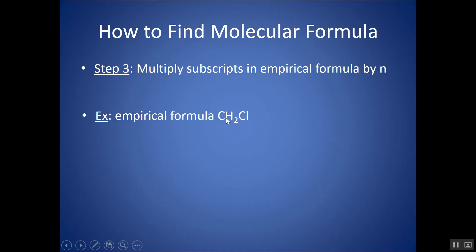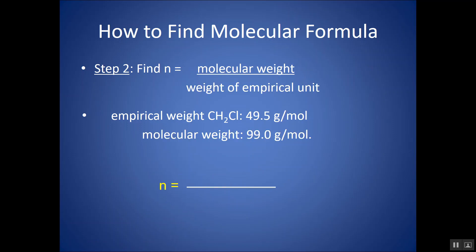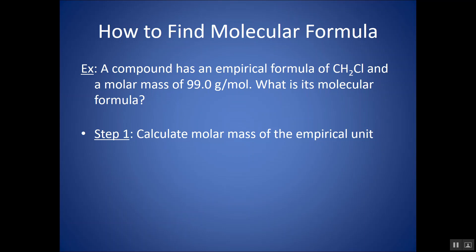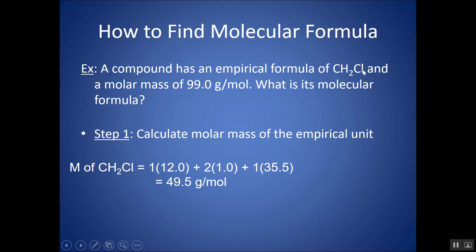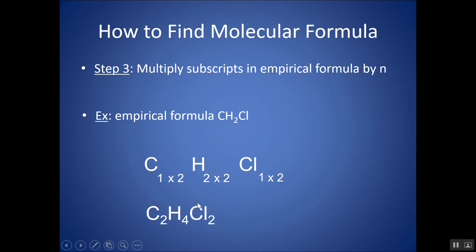So if my empirical formula is CH₂Cl, if I take those subscripts — the 1, the 2, the 1 — and I multiply them all by that integer 2, then I get my molecular formula: C₂H₄Cl₂. This is actually a really simple problem. Looking back at this step by step: all I'm doing is getting the molar mass of the empirical formula, then taking the molar mass given in the problem and dividing by this number to give me some whole number integer, and then multiplying my subscripts by that number to get the molecular formula. Very simple process.